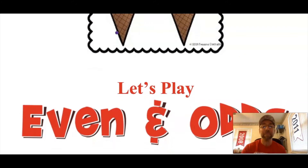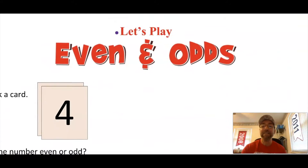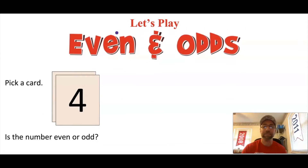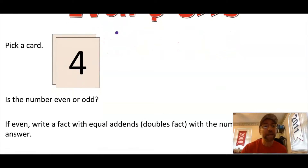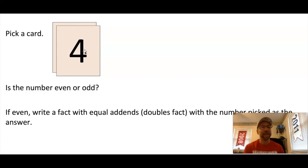Today we're going to be playing a little game called Even and Odds. Let me show you how this game works. You're going to need your whiteboard, so you might want to clear it. The first way we play is we pick a card. My card is the number 4. Go ahead and write the number 4 on your whiteboard. Now the first thing we have to do is think: is the number 4 even or odd?